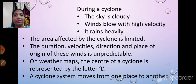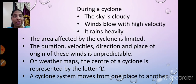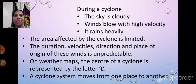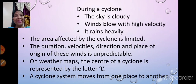On weather maps, just as mountains are shown by a triangle symbol and rivers and railway lines by their own symbols, the center of a cyclone is represented by the letter L. A cyclone system moves from one place to another within that limited region only. This system keeps moving from one place to another in that limited area.